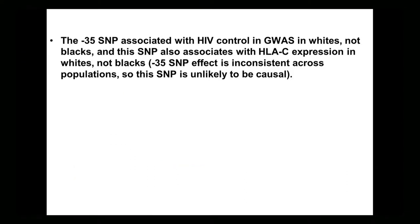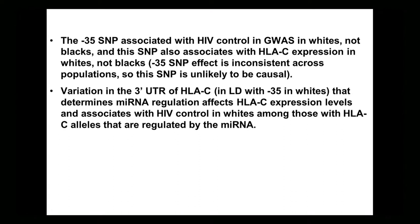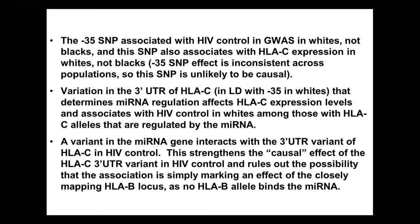The minus-35 SNP is associated with HIV control in GWAS in whites but not blacks. That SNP associates with HLA-C expression in whites but not blacks, and we think it's unlikely to be the causal SNP. Variation in the 3-prime UTR of HLA-C, which is in LD with minus-35 in whites, determines microRNA regulation that affects HLA-C levels and associates with HIV control. A variant in the microRNA gene interacts with the 3-prime UTR of HLA-C, which strengthens the causal effect and rules out the possibility that it is simply marking the HLA-B locus.